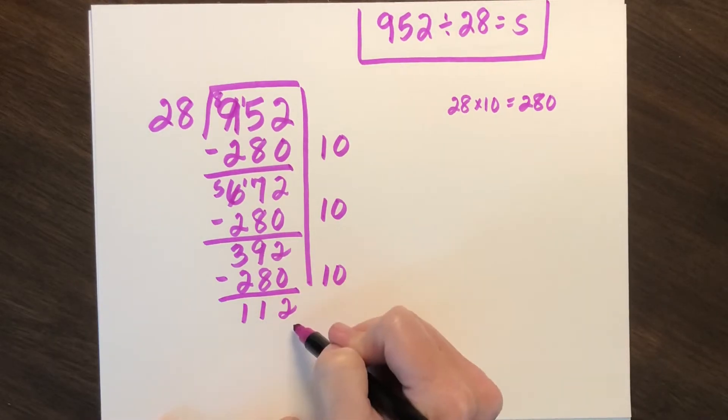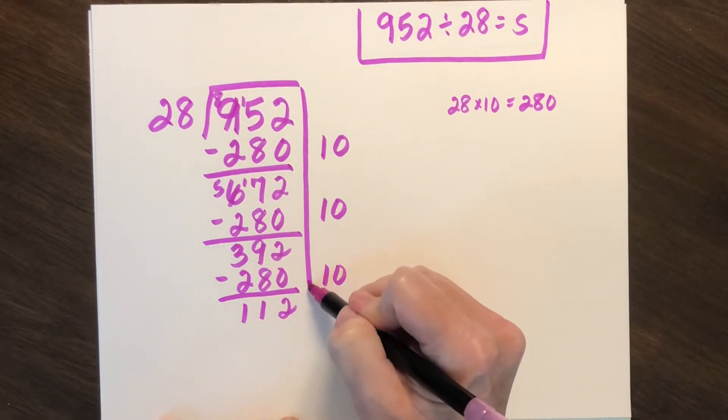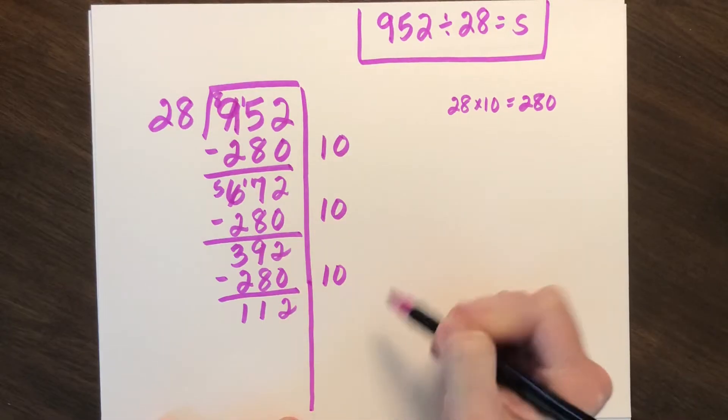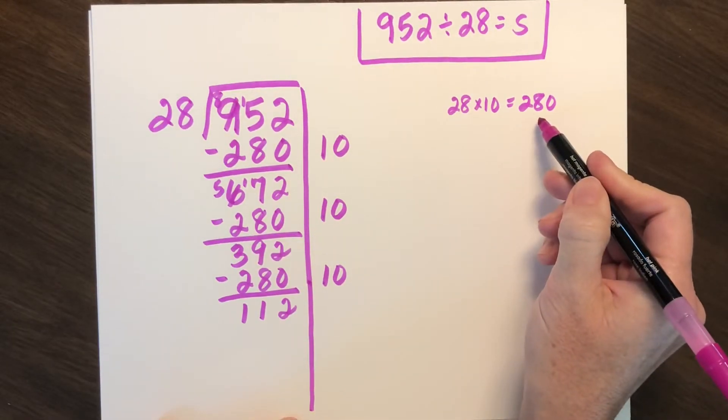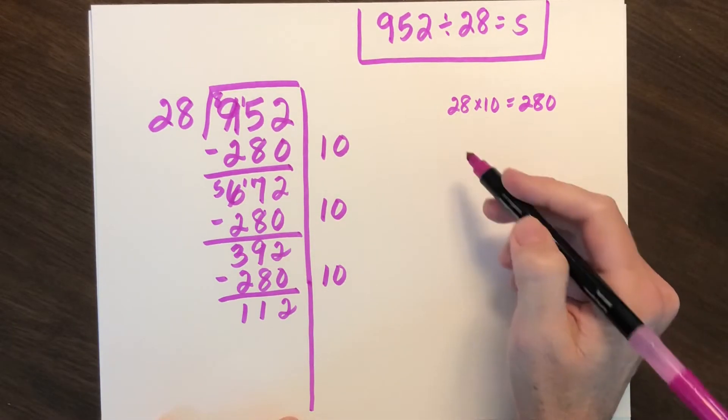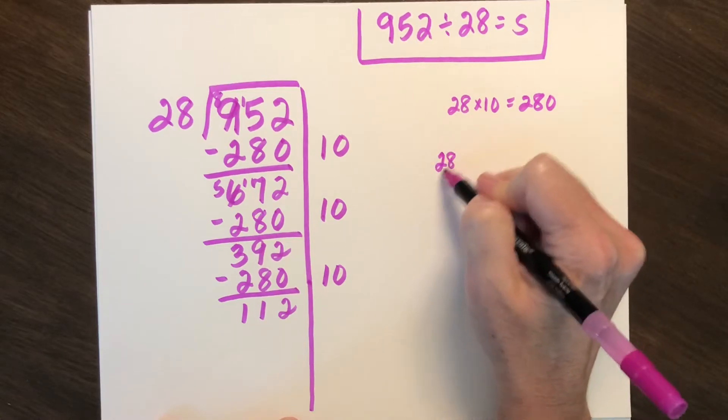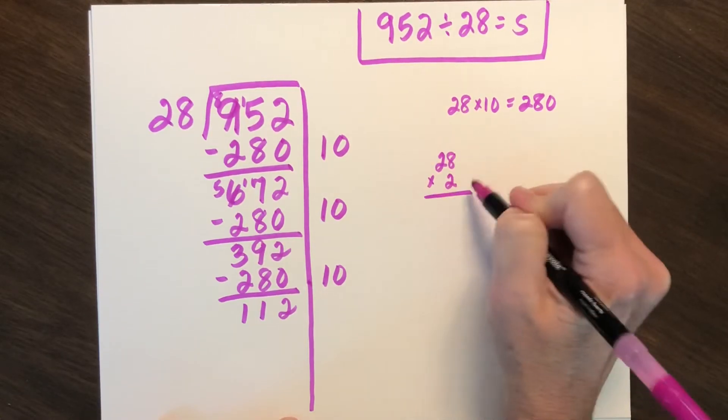I have 112 left over. How many more groups can I do? Not another 10. I'm going to use friendly numbers that I know. I'm going to do 28 times 2. That's one I typically like.